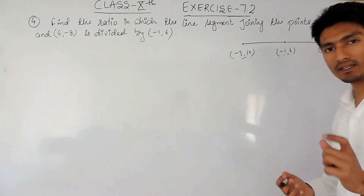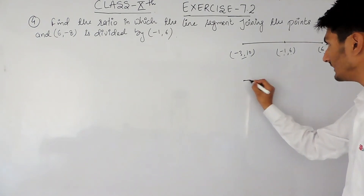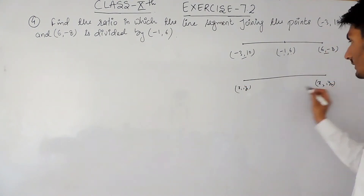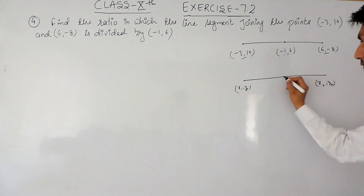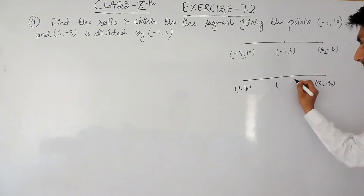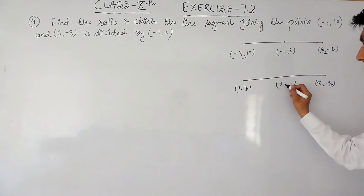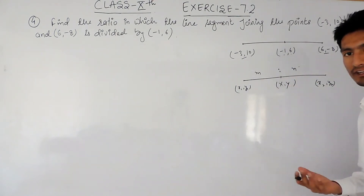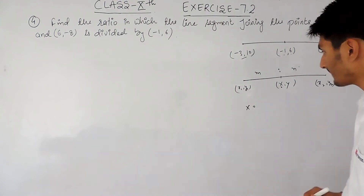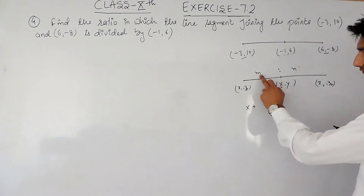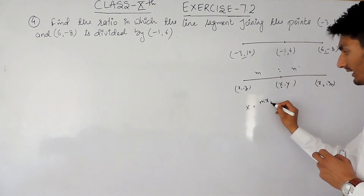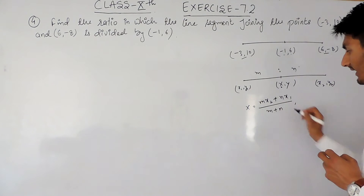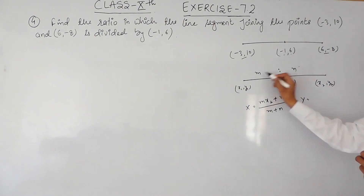The first important thing here is the section formula. In the section formula, there are always two endpoint coordinates given to you, and there is a point in between whose coordinates are given — this point divides the line in some ratio m:n. To find the x-coordinate, the section formula says you multiply m with x2, then add n multiplied by x1, and in the denominator you add m and n. To find the y-coordinate, you do the same with y2 and y1.